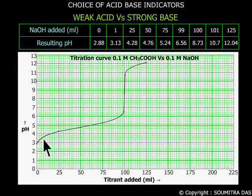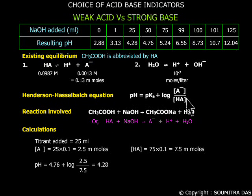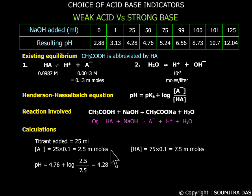The pH at this region is calculated by the Henderson-Hasselbalch equation, because by adding NaOH, sodium acetate is formed and an acetic acid buffer is formed. When 25 ml of NaOH is added, that is 2.5 mmol of acetate ion is formed and 7.5 mmol of acetic acid remains. The pH is therefore calculated to be 4.28.